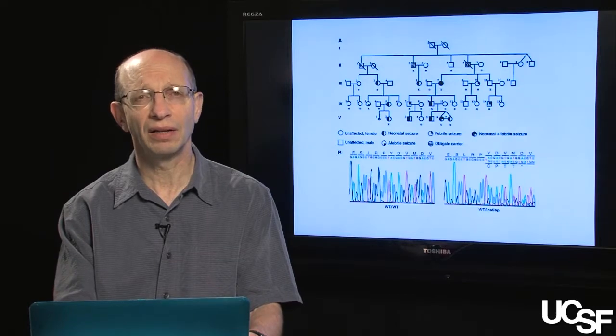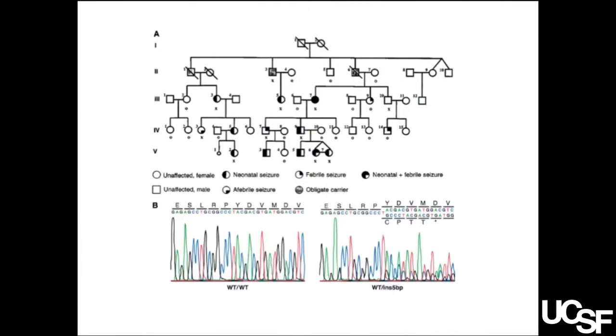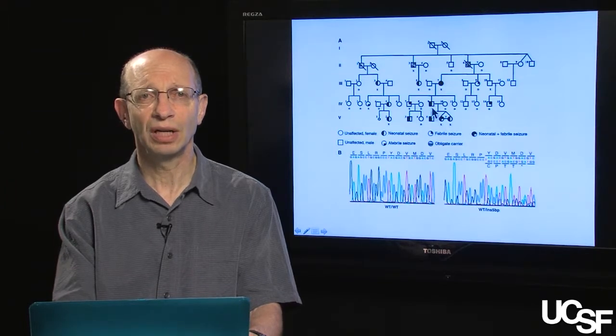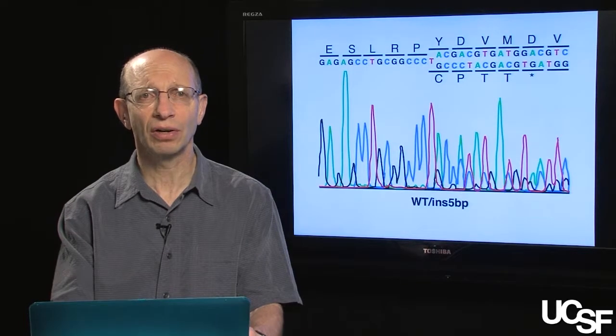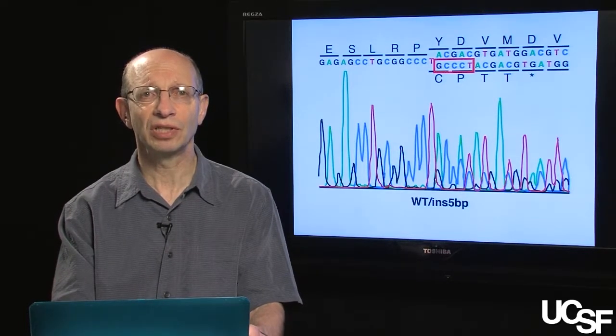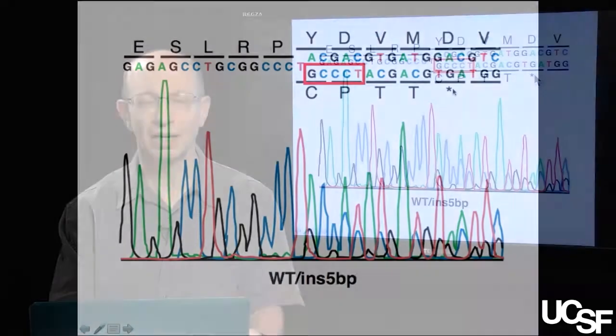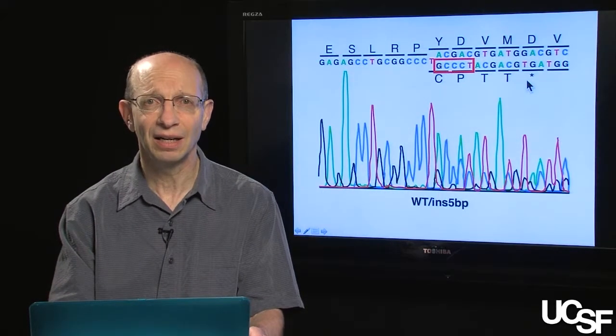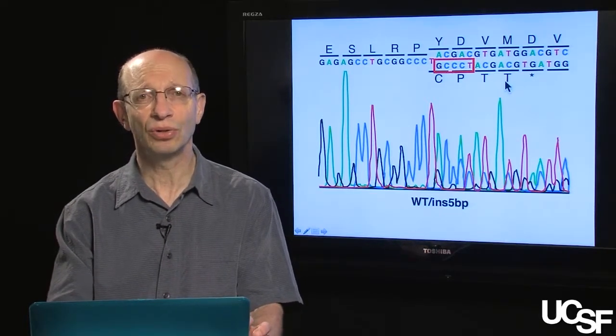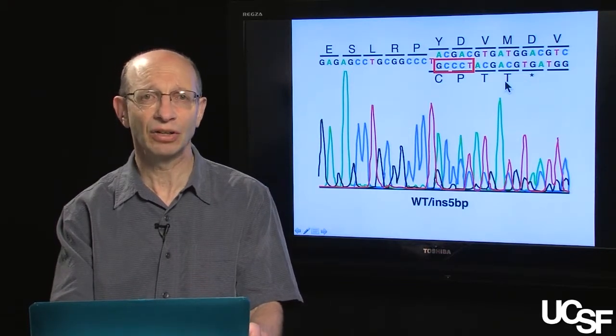Like many of these early discoveries, these have been based on the identification of large families in which epilepsy clearly runs through the family. You can see the many affected members here. By sequencing these individuals, these investigators were able to identify a particular five-base insertion. If you see this series here, GCCCT has actually been inserted into this part of the sequence. This results in a change in the protein coding from tyrosine, aspartate, valine, methionine, to cysteine, proline, threonine, threonine, and this turns out to be a stop codon. So now this is a potassium channel subunit that has been truncated. Further studies have indicated that this truncation leads to dysfunction of the potassium channel in a way that caused increased excitability.